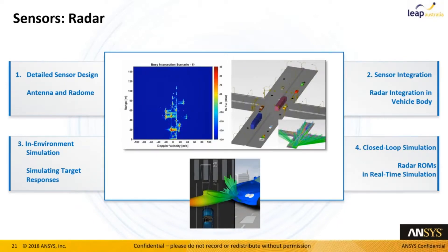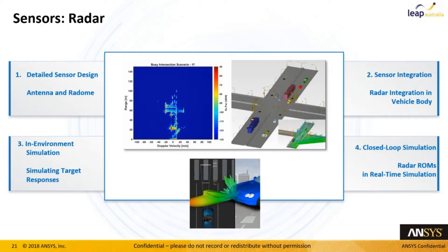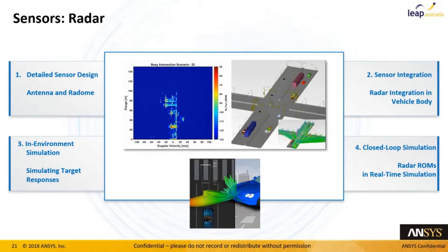We use a pulsed Doppler radar in many cases because the pulse gives us a concrete starting point to determine the range, and the pulse width also gives us the ability to look at range resolution.